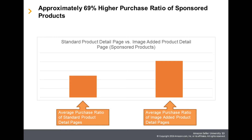This graph compares purchase ratios of products that implemented Rich Product Description with products that did not implement it, within products that executed sponsor product. Compared to products that did not implement the function, products that did had effects of an approximately 69% higher purchase ratio.